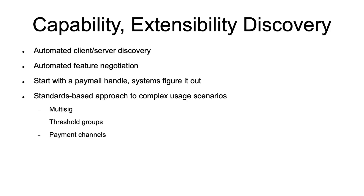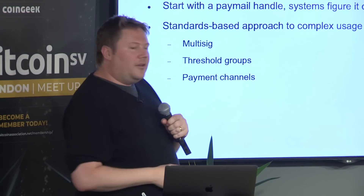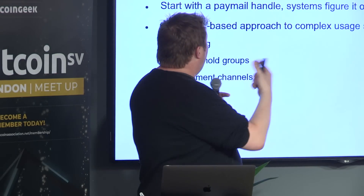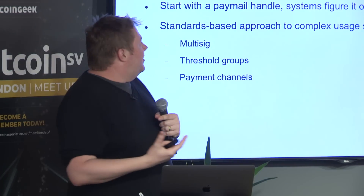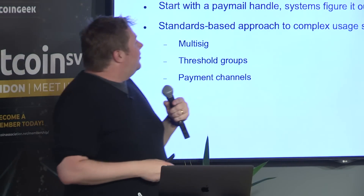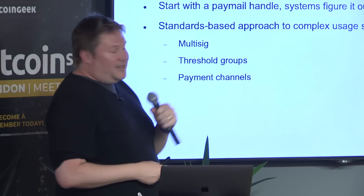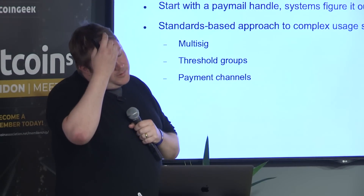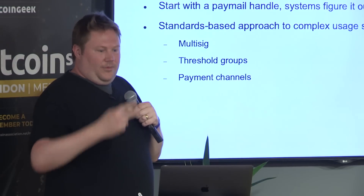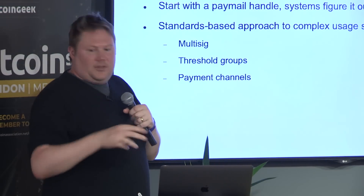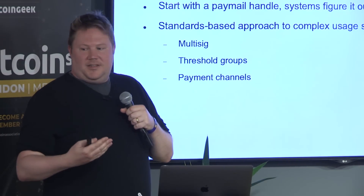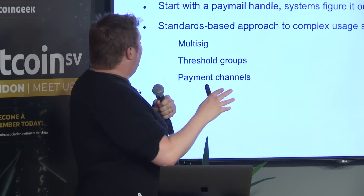The capability and extensibility discovery is one of the foundational pieces. One Paymail service can talk to another and figure out what they both support. Anyone can write a spec — there's a way of generating a unique ID for a spec as a function of the spec name, version, authors, and date. This allows anyone to publish an extension to Paymail and uniquely find it through the capability discovery mechanism. For example, if someone creates a multi-sig protocol and two Paymail service providers implement it, their users would just start using it because their wallets would both understand that particular protocol. Extensibility is right in there from day one.